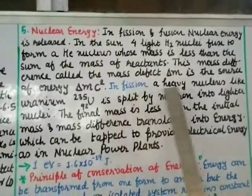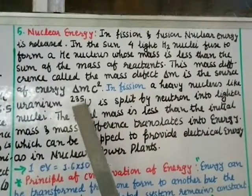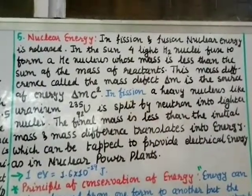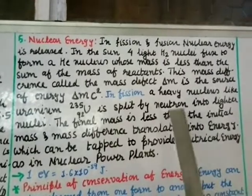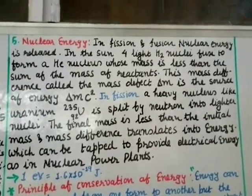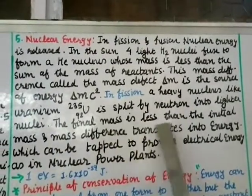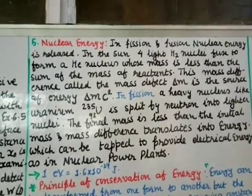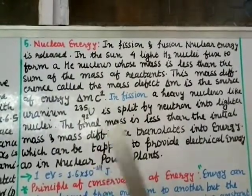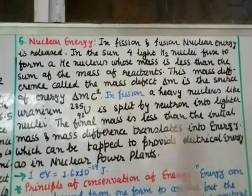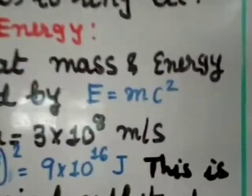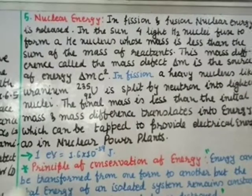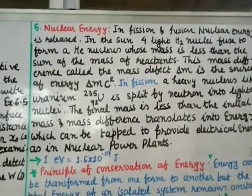In fission, a heavy nucleus like Uranium-235 is split by a neutron into lighter nuclei. The final mass is less than the initial mass, and this mass defect is transformed into energy using the same formula E = mc².